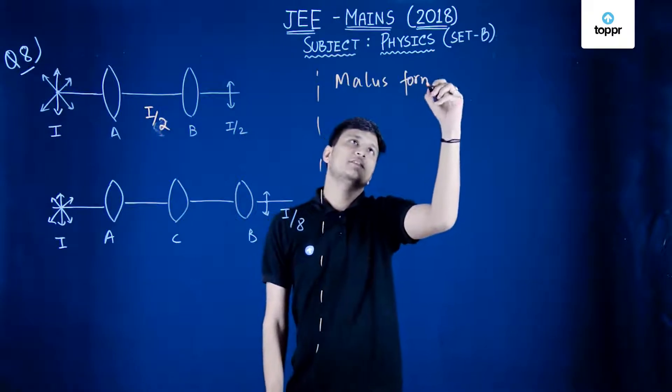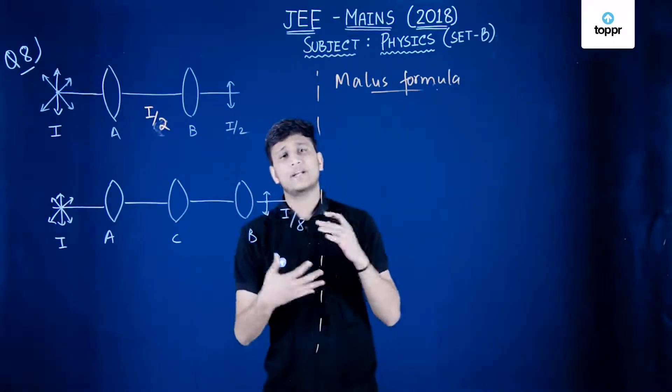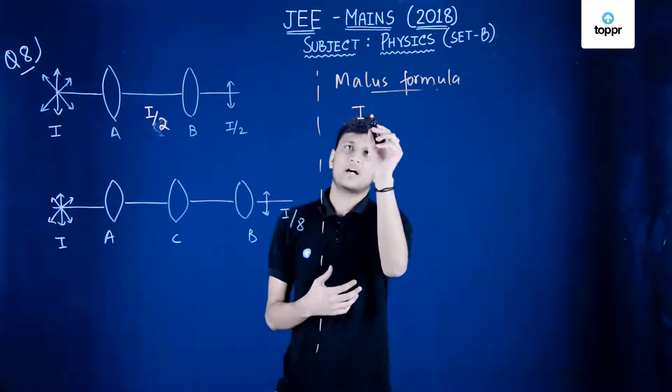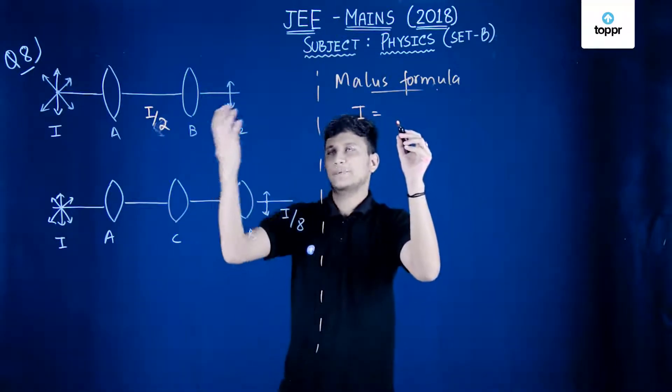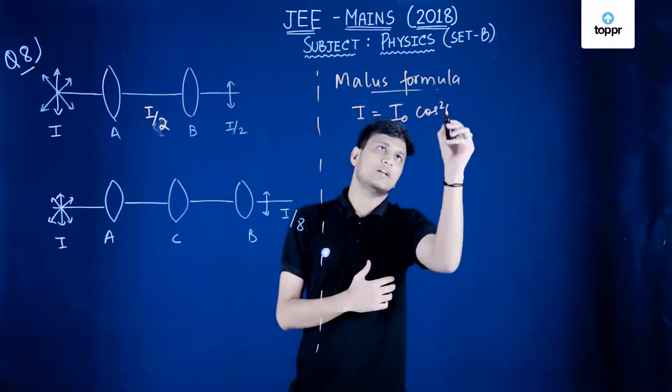So what does it say? We can easily calculate the intensity depending on the angles, which is I equals I0 cos square theta.